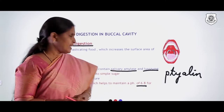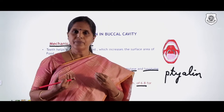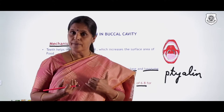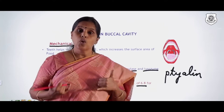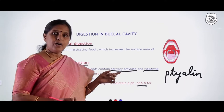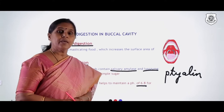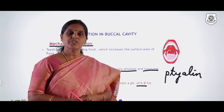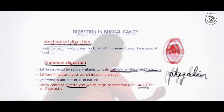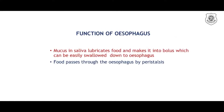The mucus in saliva coats the food, making swallowing easy. To summarize: saliva has salivary amylase as the enzyme, lysozyme which is antibacterial, electrolytes which give the proper pH for enzyme action, and mucus which coats the food and helps in easy swallowing.